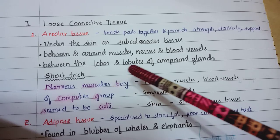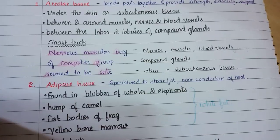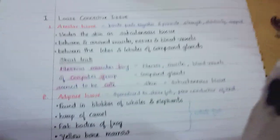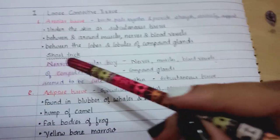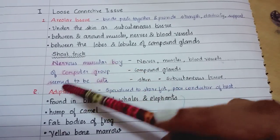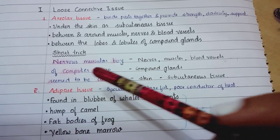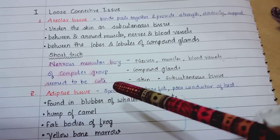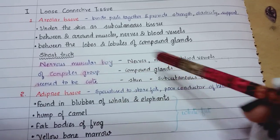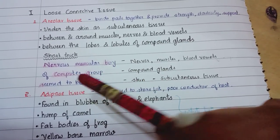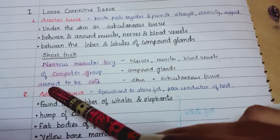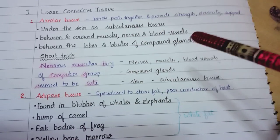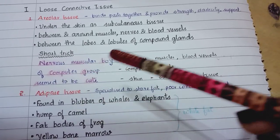Areolar tissue is also found between the lobes and lobules of compound glands. The short trick to learn this is: Nervous Muscular Boy of Computer Group Seem to be Cute. Nervous for nerves, Muscular for muscles, Boy for blood vessels, Computer Group for compound glands - lobes and lobules - Seem for skin, and Cute for subcutaneous tissue.